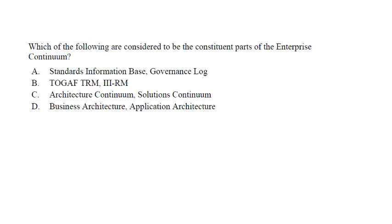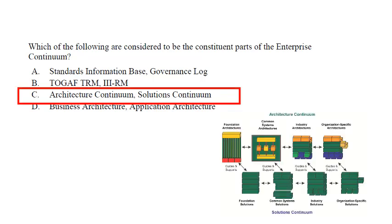You are doing a great job — let's keep going. Question 5: Which of the following are considered to be constituent parts of enterprise continuum? Options: A) Standard information base, B) governance log, C) TOGAF TRM and architecture continuum and solution continuum, D) business architecture, E) application architecture. The two constituent parts of enterprise continuum are the architecture continuum and the solution continuum. So the correct answer is option C.